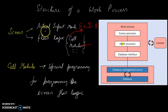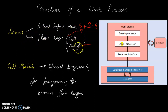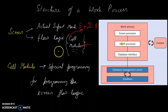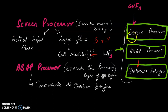There are two actual components: the input mask and flow logic. The flow logic contains many modules — you can call them call modules. The screen processor determines which call module is required.